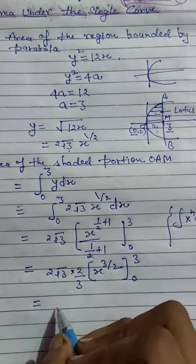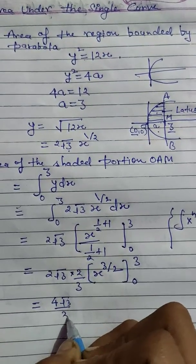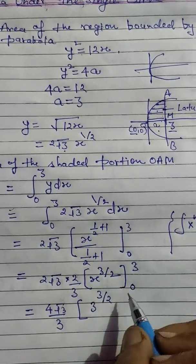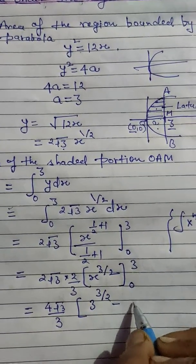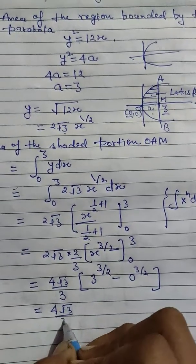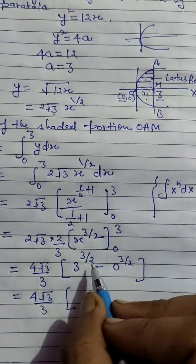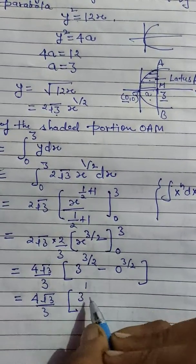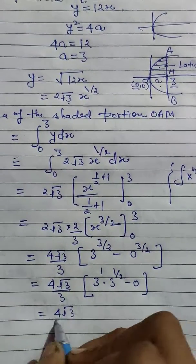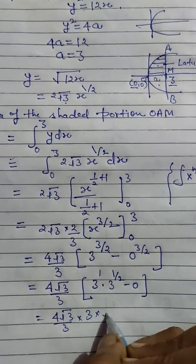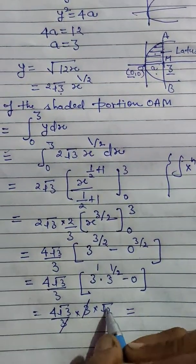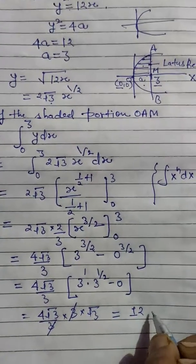Putting in the limits: upper limit x = 3 gives 3^(3/2), and lower limit gives 0^(3/2) = 0. So the expression becomes (4√3/3) × 3^(3/2). Since 3^(3/2) = 3 × √3, this gives (4√3/3) × 3√3 = 4√3 × √3 = 4 × 3 = 12. The area of region OAM is 12 square units.